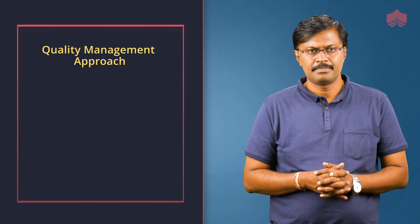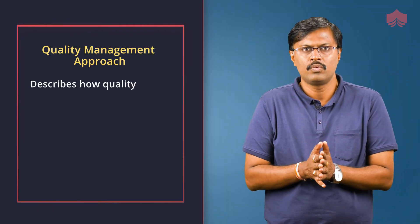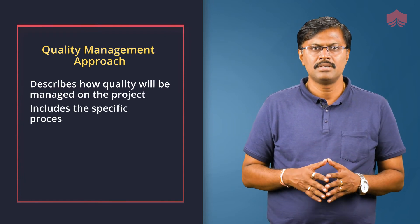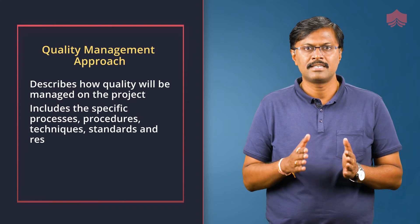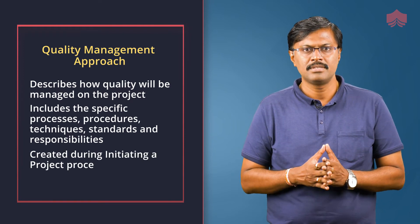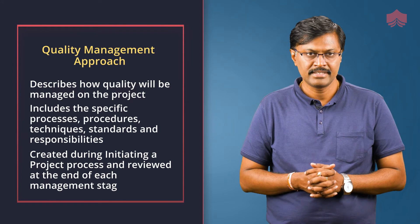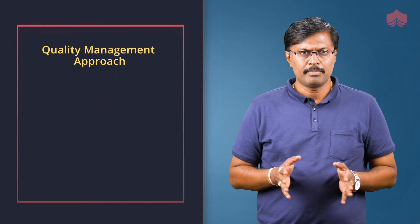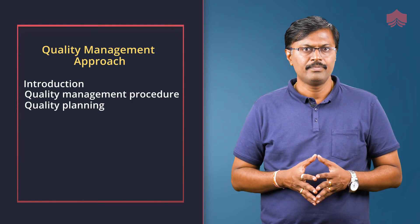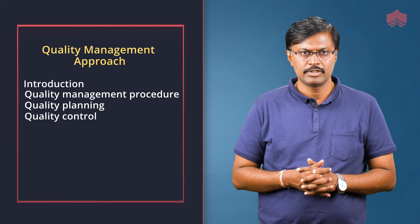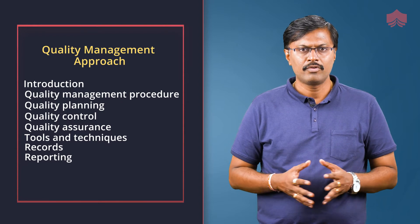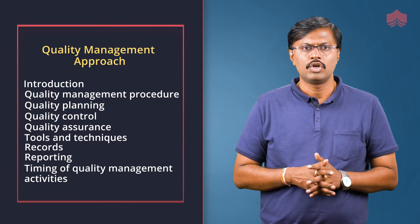Quality management approach describes how quality will be managed in a project. It includes the specific processes, procedures, techniques, standards, and responsibilities. It is created during the initiating a project process and reviewed at the end of each management stage. Quality management approach should comprise of: introduction, quality management procedure, quality planning, quality control, quality assurance, tools and techniques, records, reporting, timing of quality management activities, and roles and responsibilities.